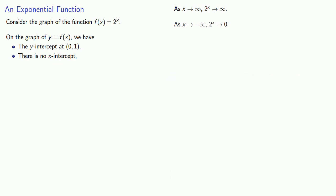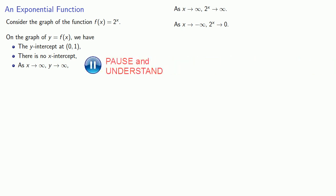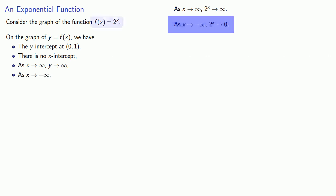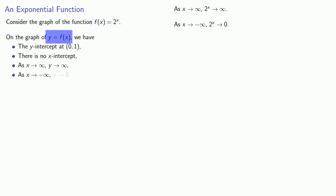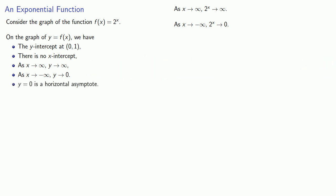Remember, if it's not written down, it didn't happen. As x goes to infinity, 2 to the x goes to infinity. But 2 to the x is f of x, and f of x is y, so as x goes to infinity, y goes to infinity. Likewise, as x goes to minus infinity, 2 to the x goes to 0, so y goes to 0. This means that y equals 0 is a horizontal asymptote.